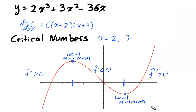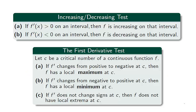Going back to our previous example, we can apply the first derivative test to see that the x value −3 is a local maximum, while the x value 2 is a local minimum. To summarize, using the first derivative we can find critical numbers, which we can use to partition the real numbers into intervals for which the function is increasing or decreasing. We can then use the first derivative test to determine which critical numbers are local extrema. In the second video for section 3.3, we will discuss how the second derivative affects the shape of the graph.